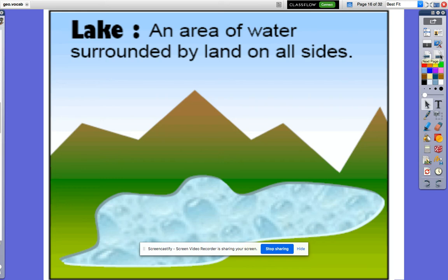A lake. A lake is an area of water that is surrounded by land on all sides.